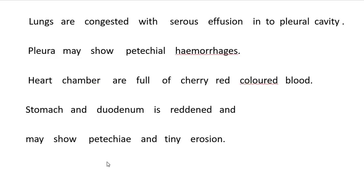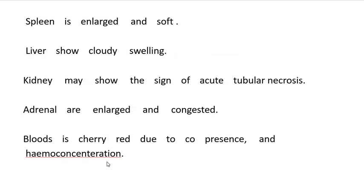Lungs are congested with serous effusion into the pleural cavity. Pleura may show petechial hemorrhages. Heart chambers are full of cherry-red colored blood. Stomach and duodenum are reddened with petechiae. Spleen is enlarged and soft. Liver shows cloudy swelling. Kidney may show signs of acute tubular necrosis. Adrenal glands are enlarged and congested. Blood is cherry red due to carbon monoxide presence and hemoconcentration.